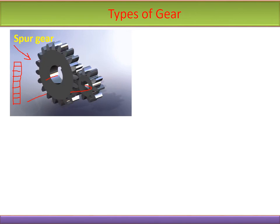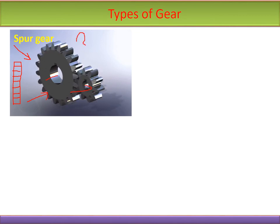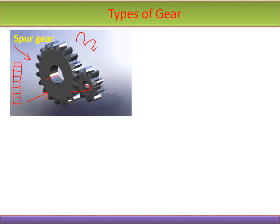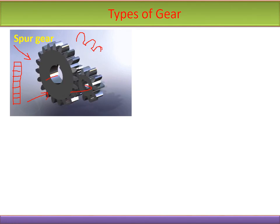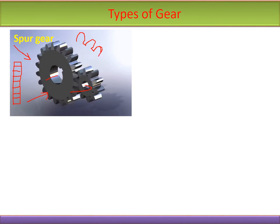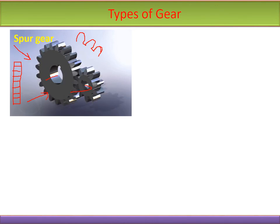From the front view, the teeth profile has an involute profile, which can be clearly seen from the animation. This involute profile is maintained through the entire depth of the tooth. That is the case of a spur gear.